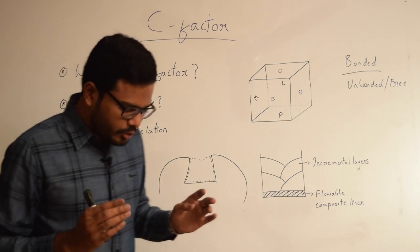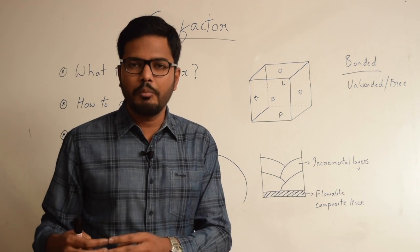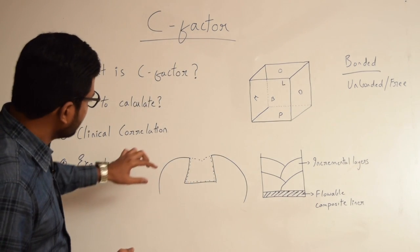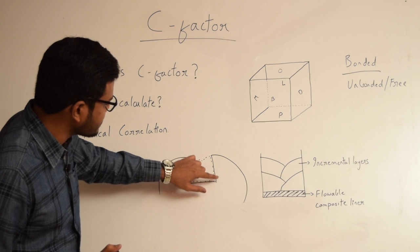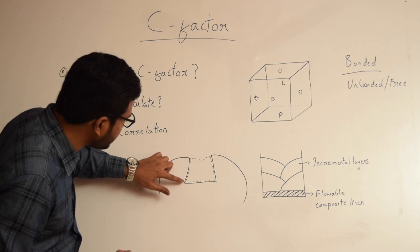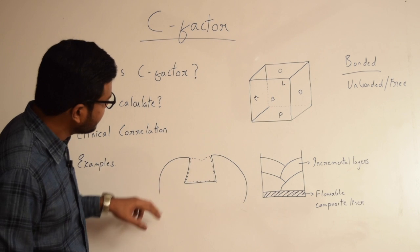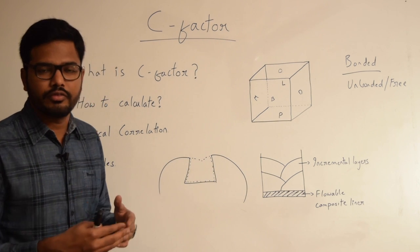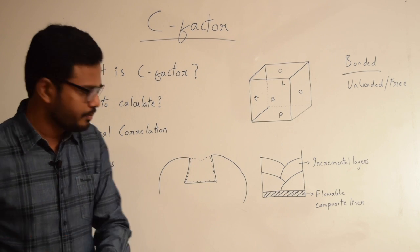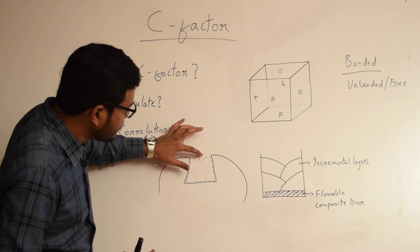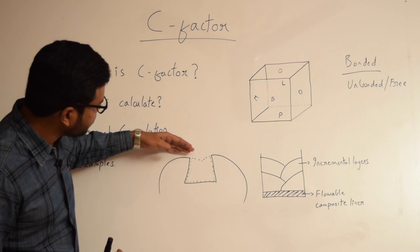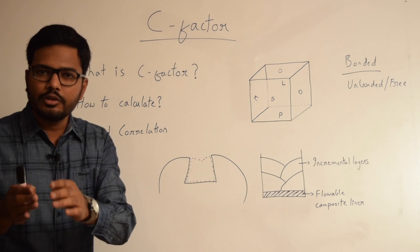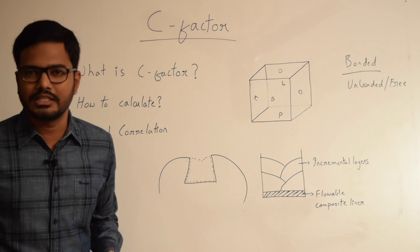Due to the inherent tendency of any resin such as composite to undergo polymerization shrinkage, there is a greater chance for stress generation along the bonded areas. Since these surfaces of composite are bonded to the tooth micro-mechanically, there can be stress generation along these areas, resulting in potential bond disruption. However, along the free surface, we can anticipate a free flow of composite, thereby reducing the amount of stress generated as a result of polymerization shrinkage.